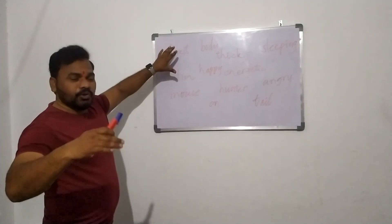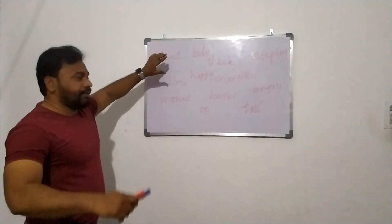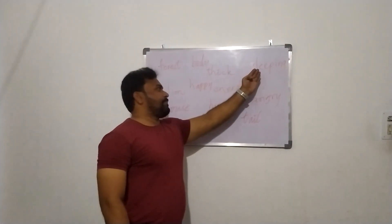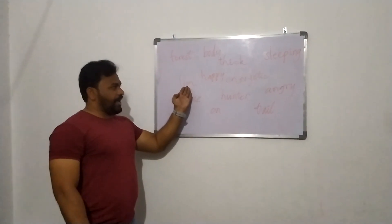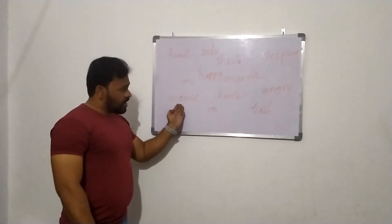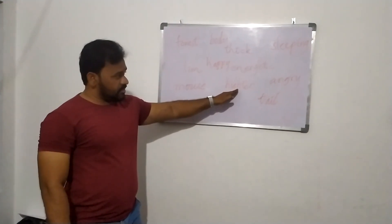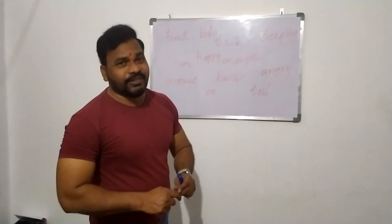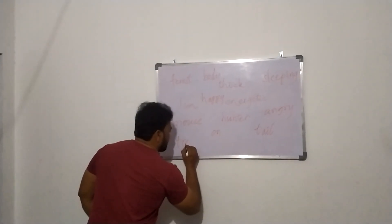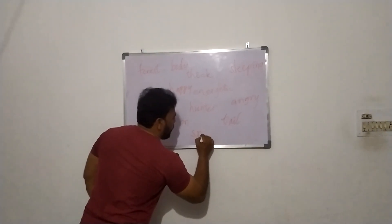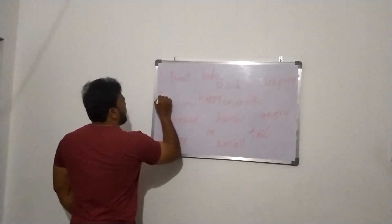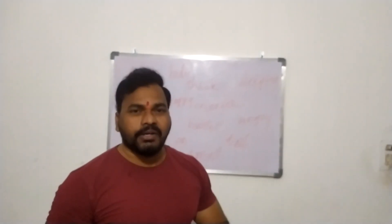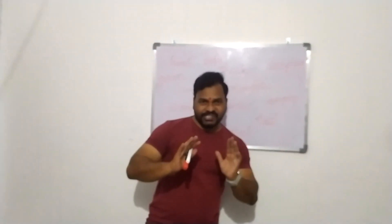Let's start. I am going to read the words — you all just keep repeating after me: forest, thick, sleeping, happy, lion, energetic, mouse, hunter, trick, angry, tail. I would also like to add some other words: tree, small, green. These are the given clue words, and based on these words I am now writing the story.